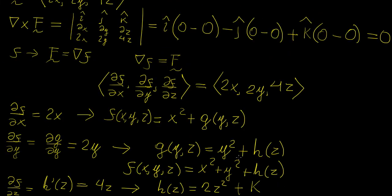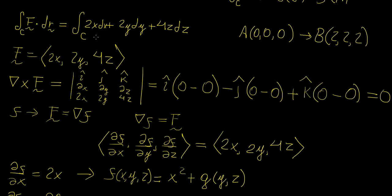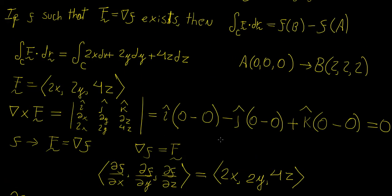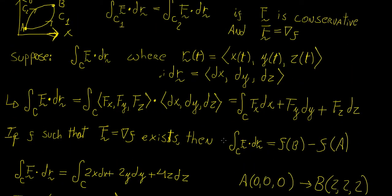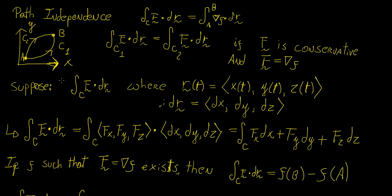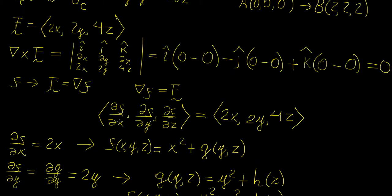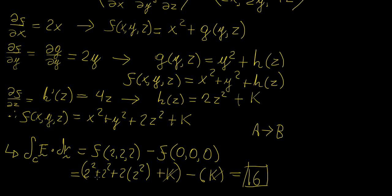We found the value of that line integral without actually specifying any path c. Just because f is conservative, we were able to evaluate it directly without specifying any path of integration. This is a really remarkable result that can come in quite handy in physics, engineering, and other applications of line integrals. Hopefully this has helped you understand what's happening when you have a line integral of a vector field, and what the implications are when the vector field is conservative and you can apply the fundamental theorem of line integrals.